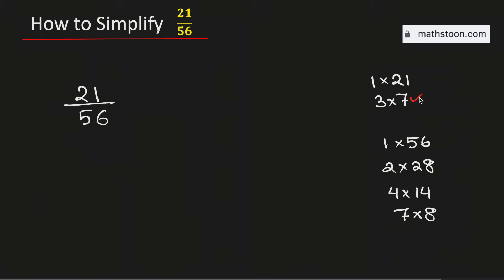See that among these numbers, 7 is the greatest one which is present in both these two lists. Therefore 7 is the greatest common factor of these two numbers.